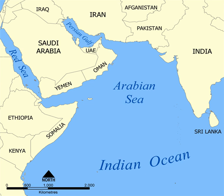Sea has several definitions. A marginal sea is a division of an ocean, partially enclosed by islands, archipelagos, or peninsulas, adjacent to or widely open to the open ocean at the surface, and/or bounded by submarine ridges on the sea floor.